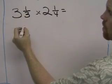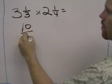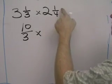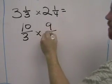3 times 3 is 9, plus 1 is 10, so that's 10 thirds times. And this, 2 times 4 is 8, plus 1 is 9, so that's 9 fourths.